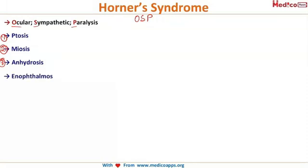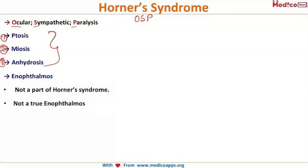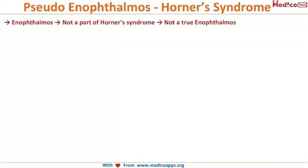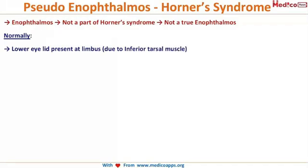A fourth feature, however, is enophthalmos — the opposite of exophthalmos — where the eye appears as if it is dragged inside into the orbital cavity. It is not a part of Horner's syndrome proper, because it is not a true enophthalmos.